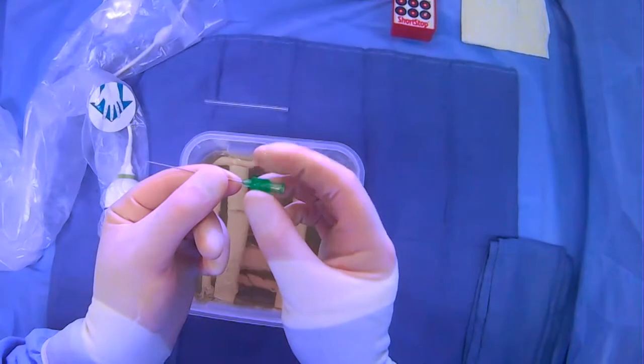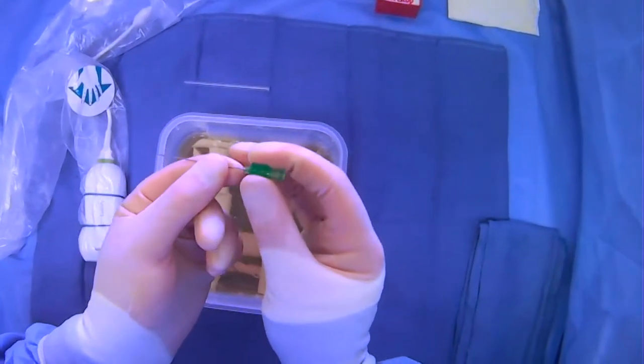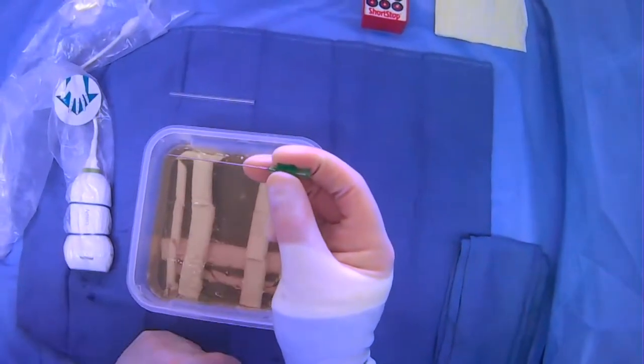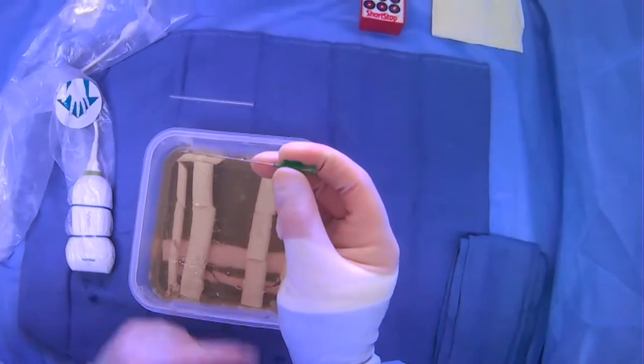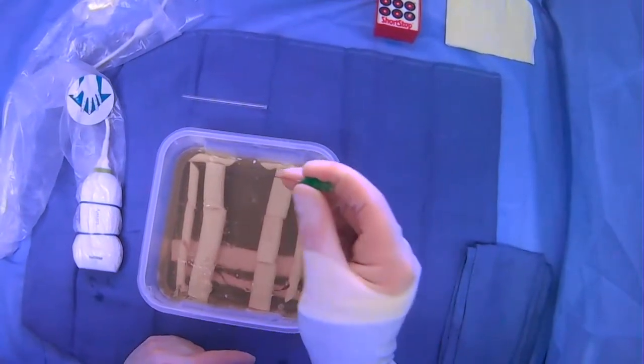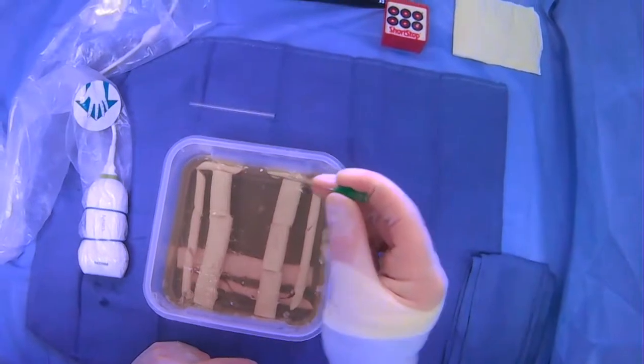You can use your thumb and index finger on either side here, and then you can also use your middle finger down here to stabilize the needle further. This is how you're going to be holding the needle when you're gaining access.